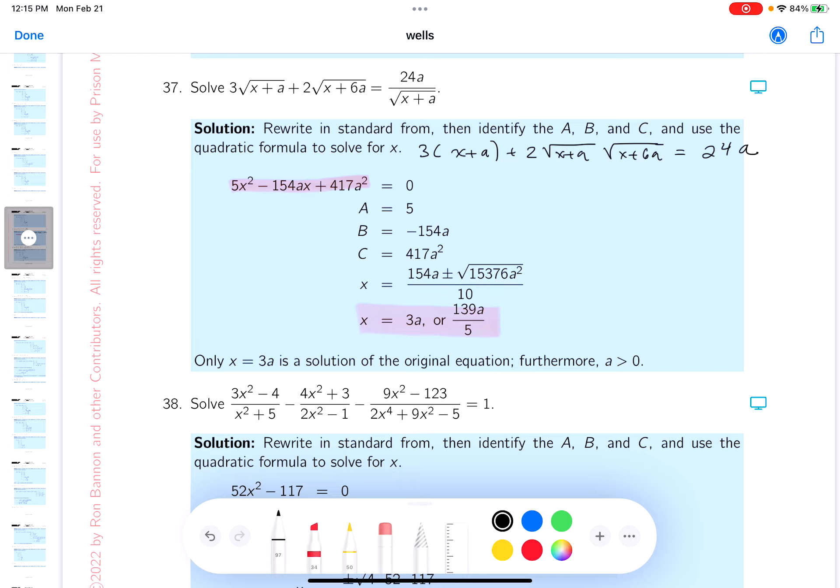Now what would I do? Well, I'm going to rewrite it. This is going to be 2 root x plus a root x plus 6a equals, well it's going to be 21a now. Why is that? I'm taking away 3a from both sides and I'm taking away 3x from both sides.